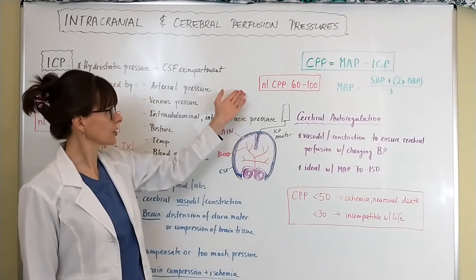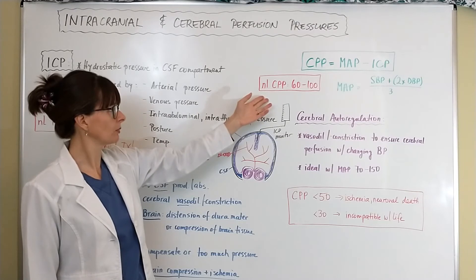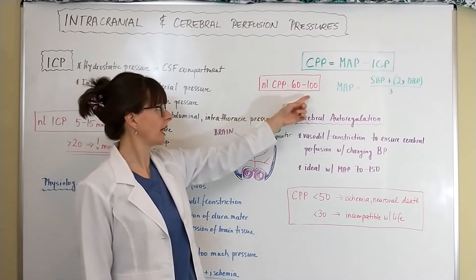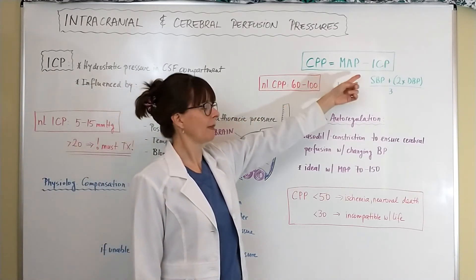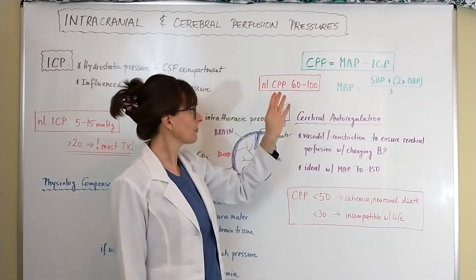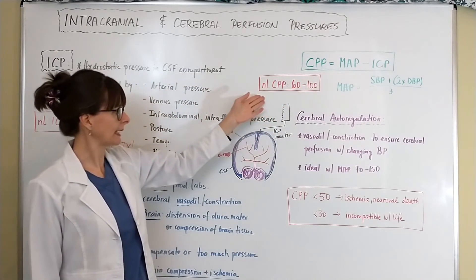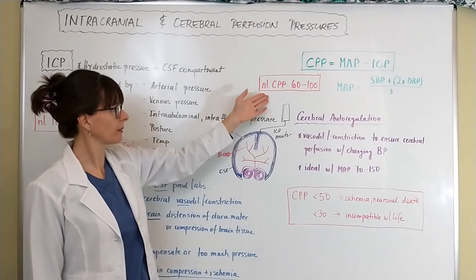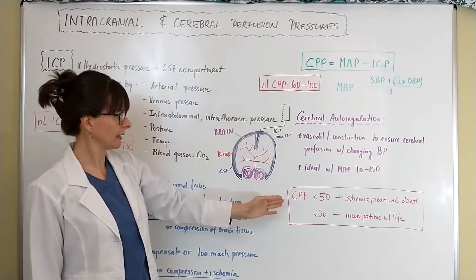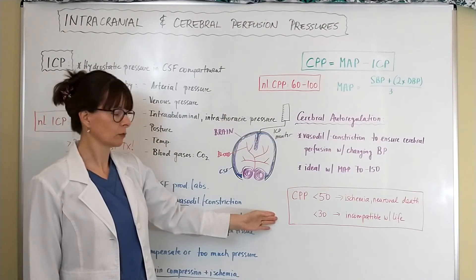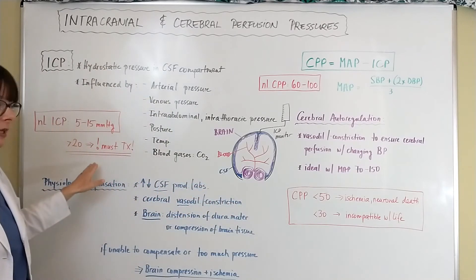Now with this calculation here, this cerebral perfusion pressure between 60 and 100, it all depends on the MAP and the ICP, but we want to make sure that we maintain that. And keep in mind that we want to maintain the CPP and that we don't want it to get too low, where the ICP we don't want to get too high.